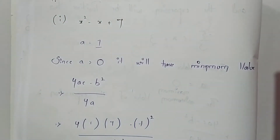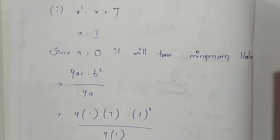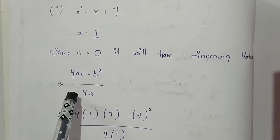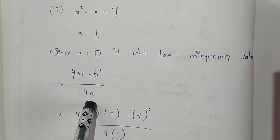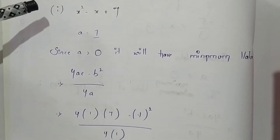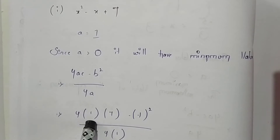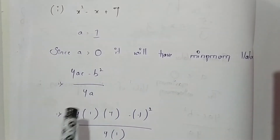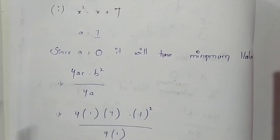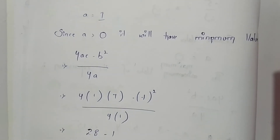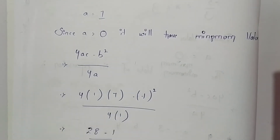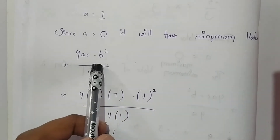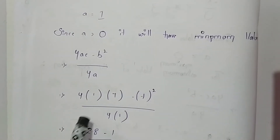The formula to find the minimum or maximum value is (4ac - b²) / 4a. From the expression x² - x + 7, the value of a is 1, c is 7, and b is -1. So we get 4 × 1 × 7 - (-1)² divided by 4 × 1.